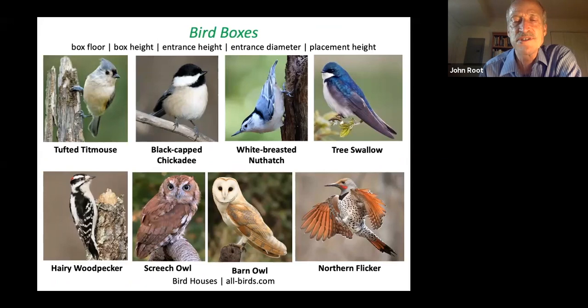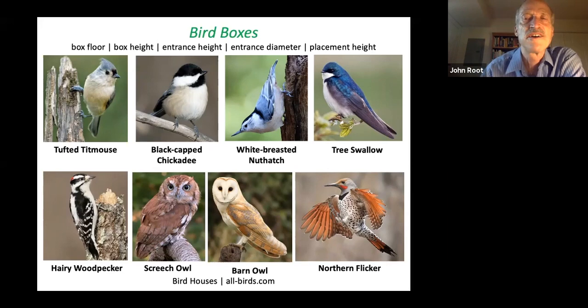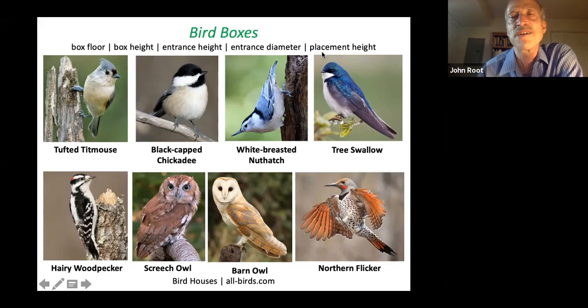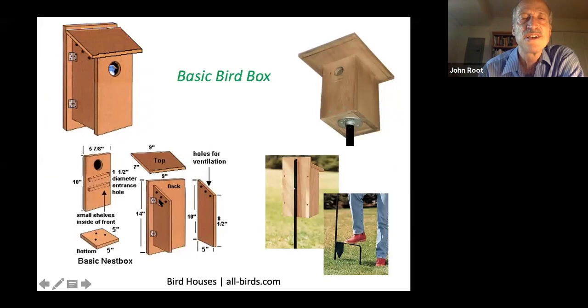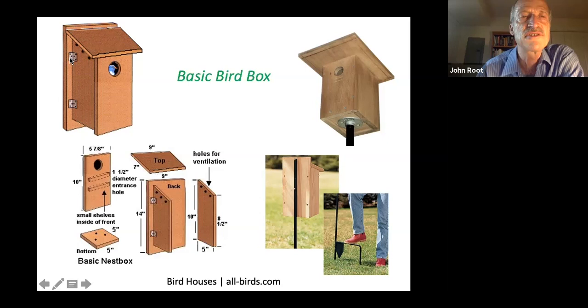For bird boxes, look for allbirds.com and you'll see the specifications for these and a number of other birds, because they actually do need different dimensions of bird boxes. The box floor dimensions, the height of that bird box, the entrance height, the entrance diameter, and the placement height — how far above the ground it is — are all specified at that website. Their basic bird box shows three holes at the top of each side panel for ventilation, three holes on the bottom for drainage, and also notice the hinges on one side so that you can open up that bird box for either cleaning or inspection.